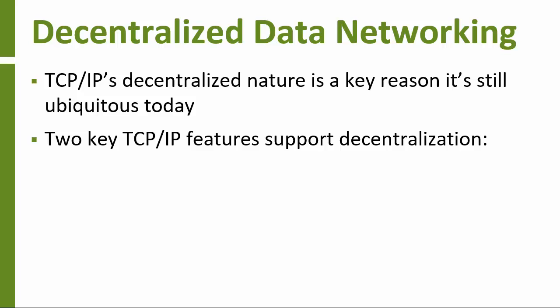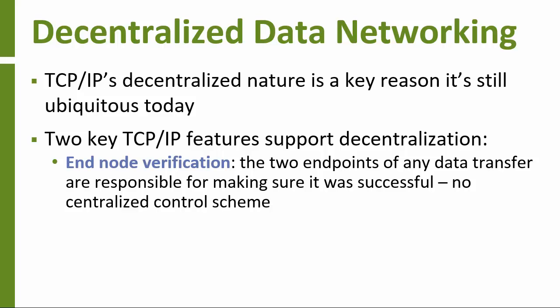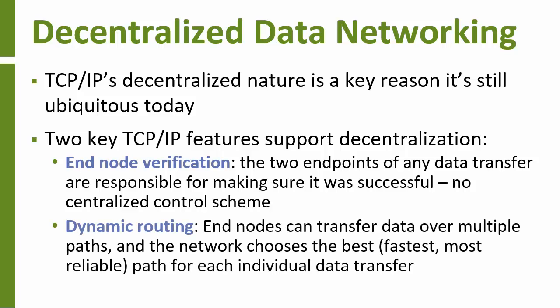There are two important features of TCP-IP that provide a decentralized environment. The first is end node verification — the two computers actually transferring data, called the end nodes, are responsible for making sure the data is transmitted correctly and completely. Every computer on a network is basically the equal, a peer, to any other computer; there's no central control scheme. The second decentralizing feature is dynamic routing: computers are connected through multiple paths, and routers are responsible for choosing the best path based on current network conditions.